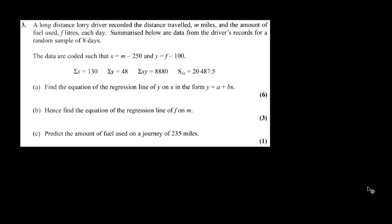This is question number three, and this is regression. A long distance lorry driver recorded the distance traveled — m miles — and the amount of fuel used — f liters. So we have two pieces of information: the distance traveled in miles and the amount of fuel used in liters.